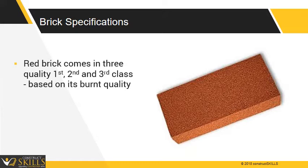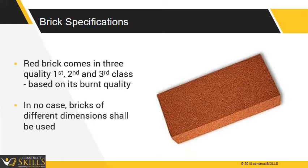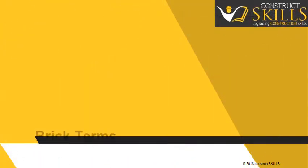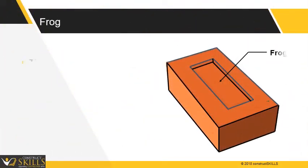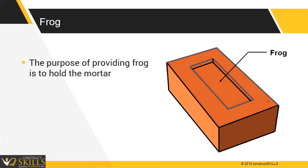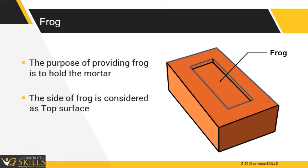In no case shall bricks of different dimensions be used in a wall section. Following are the different brick terms used on a construction site. Frog: the purpose of providing a frog is to hold the mortar and increase binding strength. The side of the frog is considered as the top surface.